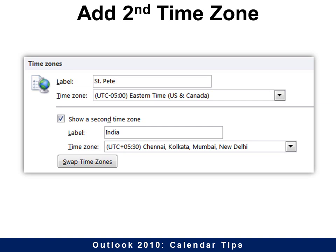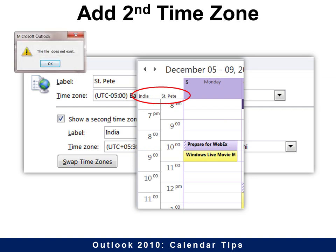This is extremely useful and I have a lot of people requesting how to do this — it allows you to have a second time zone. So you can show a second time zone; for example, here's India. Now I've got both India and St. Pete so I can see both. India is the only one I'm aware of that's at a half-hour difference, so it's very confusing. If you are working with India, it might be a good idea to do that.